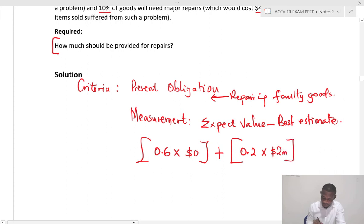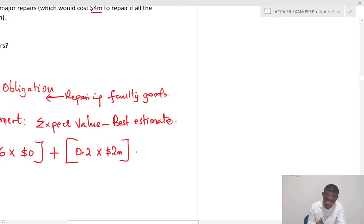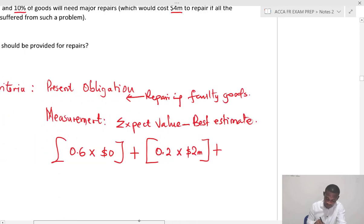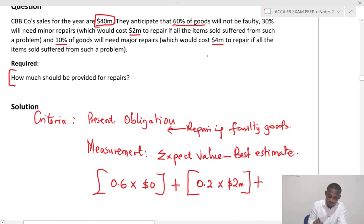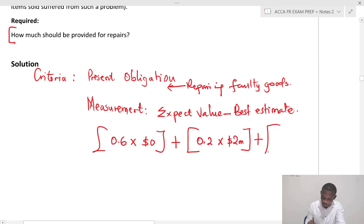And then finally, 10% when they are returned and need major repairs, we have 4 million. So the expected cost of all of these repairs is 0.1 times 4 million.